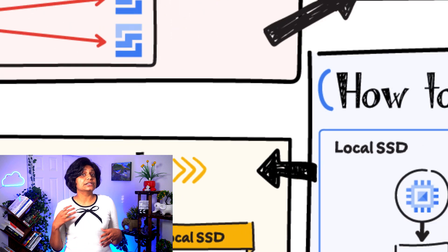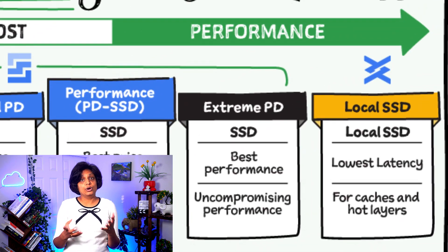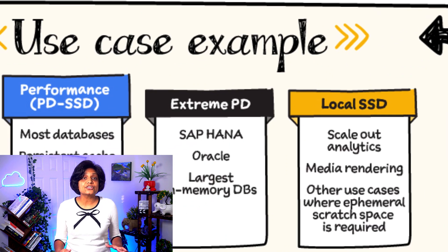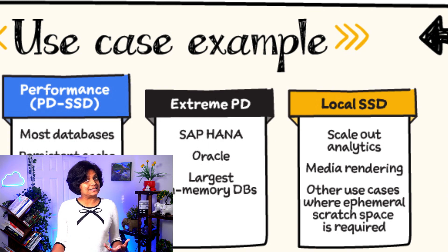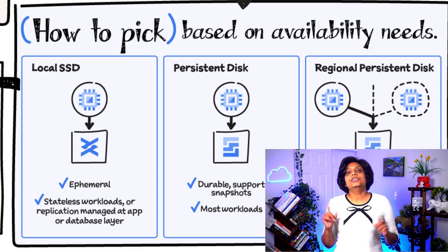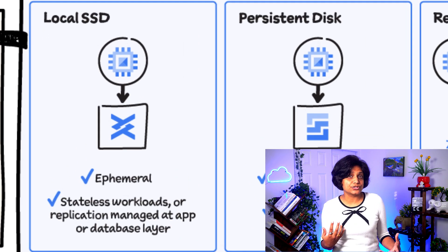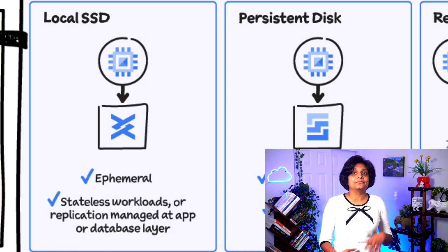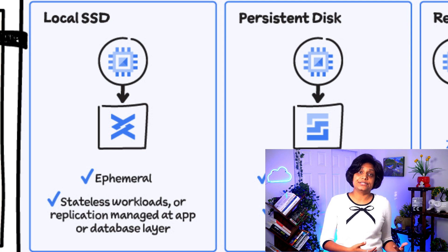If your apps need really low latency, then local SSD is the option for you. It is best for hot caches that offer best performance for analytics, media rendering, and other use cases that might require scratch space. Use local SSD if you just need ephemeral storage for stateless apps that manage replication at the application level or the database layer.